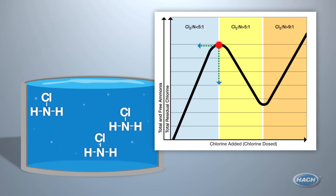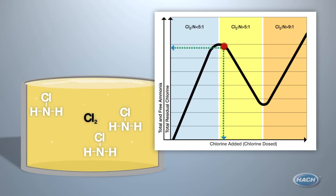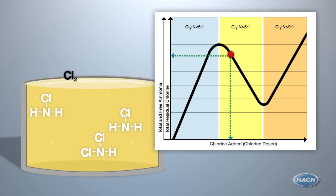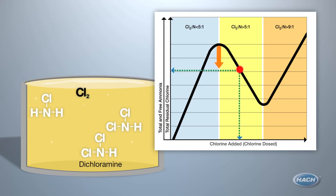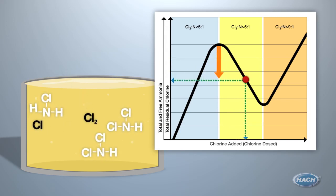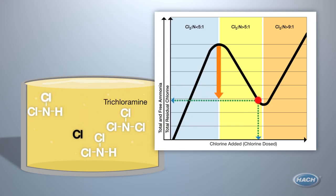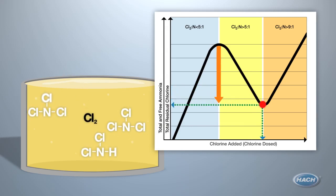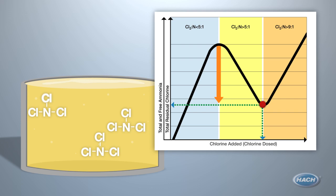If you continue to dose chlorine past this state, you begin to experience di- and finally tri-chloramination. These states are not ideal. It causes your chlorine residual to drop radically, although you are adding more chlorine. You will experience taste and odor issues when you are in this zone, and your disinfecting power is drastically cut.